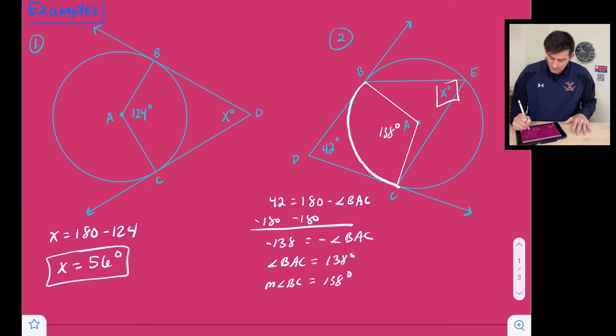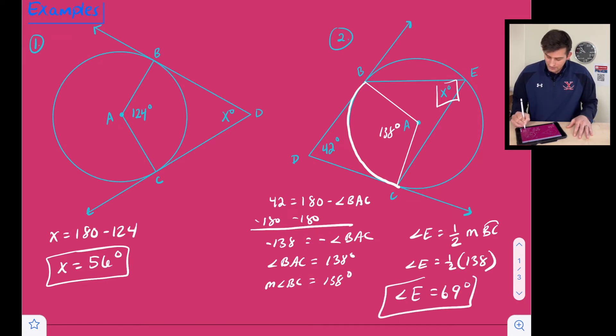So our inscribed angle theorem tells us that it is half the measure of its intercepted arc. So that means we'll call this angle E here is going to be equal to one half the measure of arc BAC. Well, we know arc BAC is 138 degrees. So that's going to be angle E is equal to one half of 138, and so that's going to tell us that angle E or X is equal to 69 degrees.